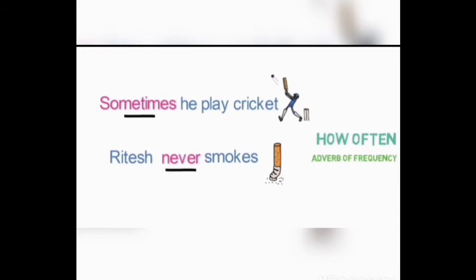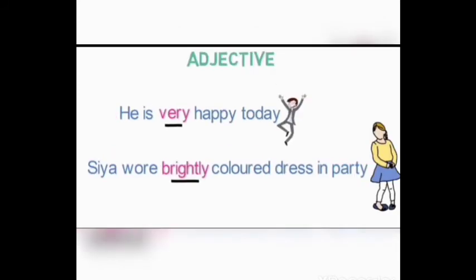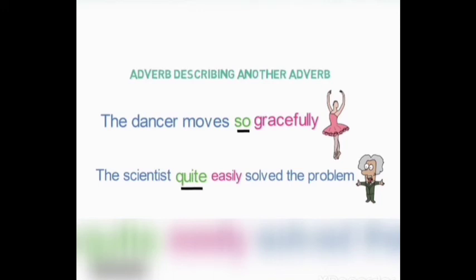Now we have seen adverbs that describe a verb or action. Let's look at adverbs that describe adjectives. 'He is very happy today.' The adjective here is 'happy,' and 'very' describes the intensity of his happiness, so 'very' is the adverb describing the adjective 'happy.' Another example: 'a brightly colored dress.' The color is the adjective describing the dress, and 'brightly' describes the intensity of the color, so 'brightly' is an adverb here.